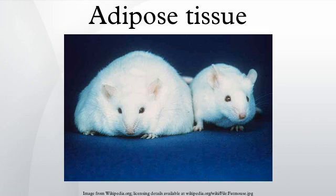In biology, adipose tissue, or body fat, or just fat, is loose connective tissue composed mostly of adipocytes. In addition to adipocytes, adipose tissue contains the stromal vascular fraction of cells including preadipocytes, fibroblasts, vascular endothelial cells, and a variety of immune cells.